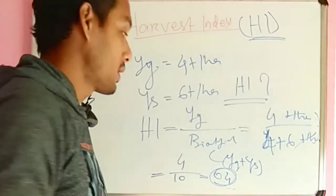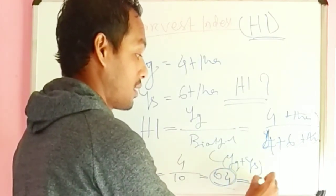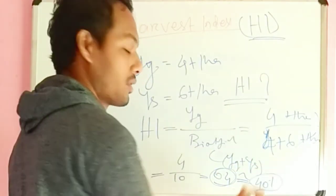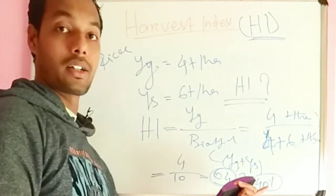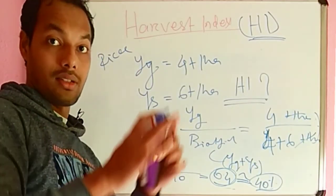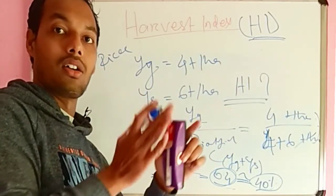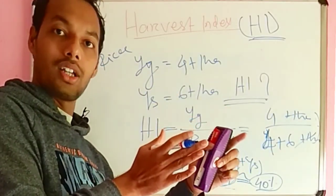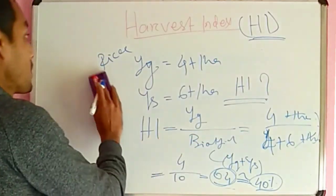So the harvest index is 0.4, meaning 40% of the biological yield is economical or consumable. That is all for today.